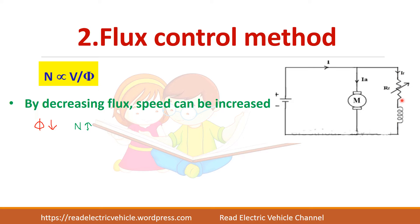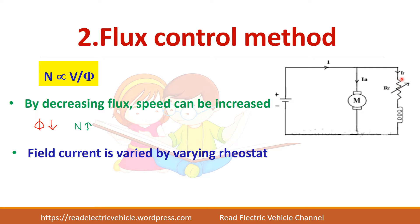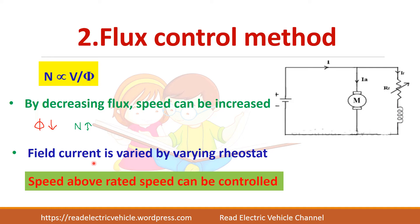Here also you have to note that a resistor is connected in series with the field winding. The total applied voltage remains the same, so you can only reduce the flux here — the field current is reduced. If the field current is reduced, speed will increase. So you can achieve speed control only above rated speed.